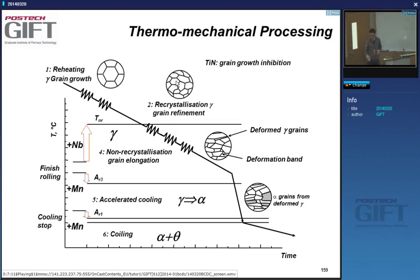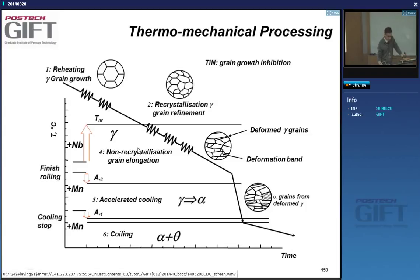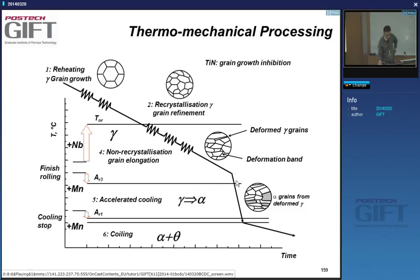Niobium additions raise the non-recrystallization temperature, giving a wide open non-recrystallization region. We also often add some additional manganese so that the AR3 temperature drops down, creating a large region of non-recrystallization. You can then deform the material in this non-recrystallization region — the grains will get pancaked, will not recrystallize, and will pancake again with no recrystallization. You accumulate a lot of strain in the austenite, forming deformed gamma grains with deformation bands. When the transformation occurs, the ferrite transforms from deformed austenite rather than recrystallized austenite, giving considerable grain refinement.